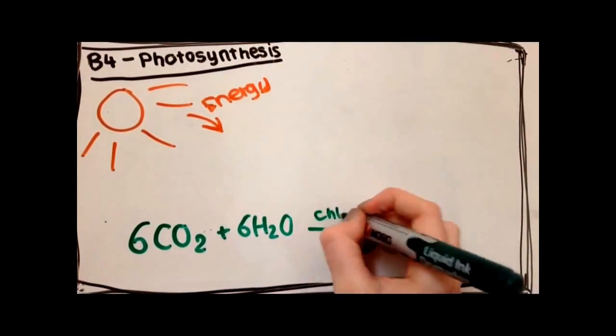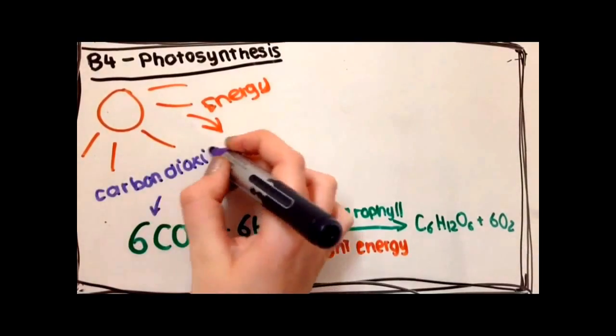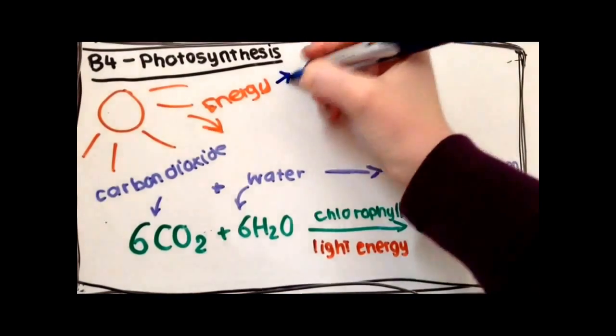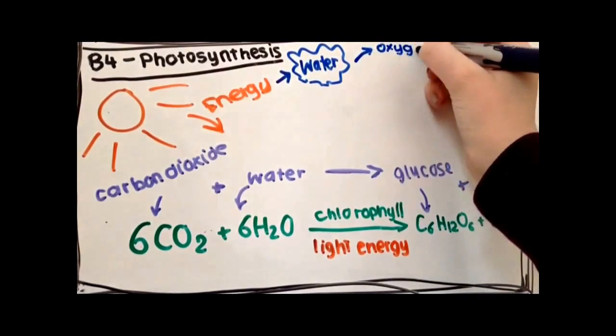B4 photosynthesis. Photosynthesis uses energy from the sun to change carbon dioxide and water into glucose and oxygen. The balanced symbol equation being 6CO2 plus 6H2O makes C6H12O6 plus 6O2.